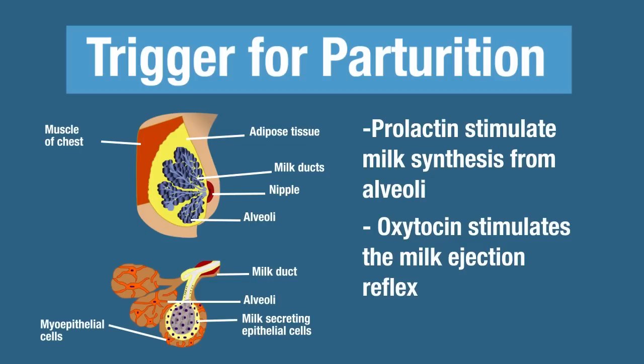Think about it — especially for an animal in the wild — as soon as they're born, you want them to have as many antibodies as possible so that they hit the ground with some sort of immunity. Later milk has more nutrients, growth factors, and hormones, and still has some antibodies, but colostrum is what's loaded with those antibodies. Remember, antibodies are proteins. Let's get into detail about lactation.